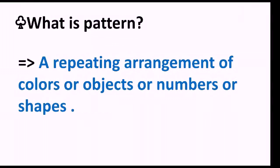What is pattern? A repeating arrangement of colors, objects, numbers, or shapes is called a pattern. That means when we arrange some numbers in a particular arrangement, or colors in a particular arrangement, or shapes in a particular arrangement, that is called pattern. We can see different types of pattern around us. In nature also, we can get different types of pattern.